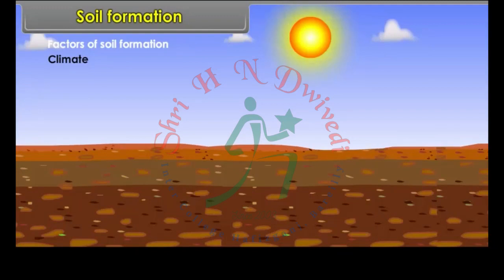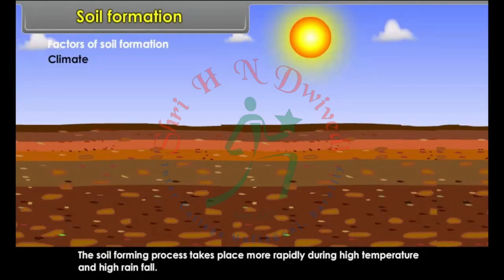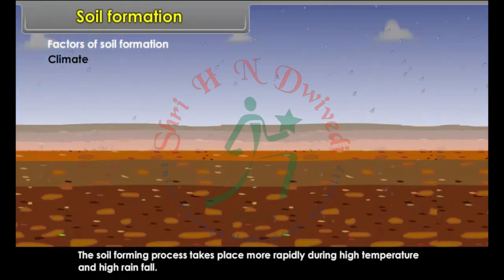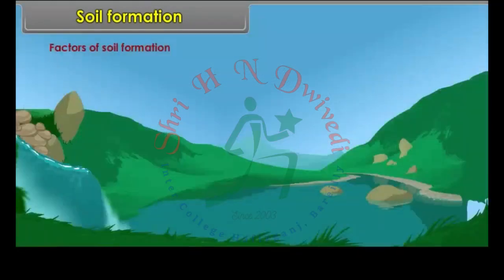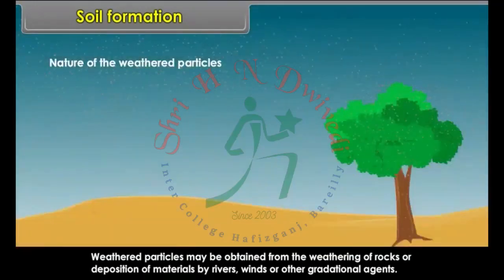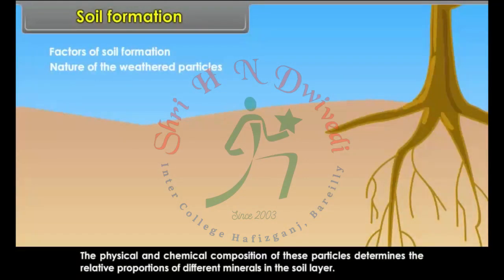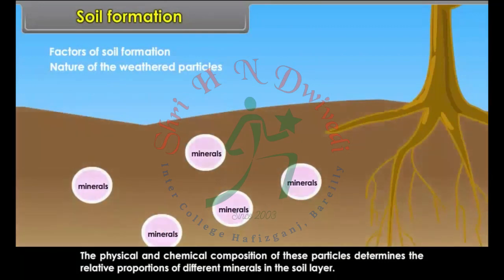Factors of Soil Formation. Climate: the soil forming process takes place more rapidly during high temperature and high rainfall. Nature of the weathered particles: weathered particles may be obtained from the weathering of rocks or deposition of materials by rivers, winds or other gradational agents. The physical and chemical composition of these particles determines the relative proportions of different minerals in the soil layer.